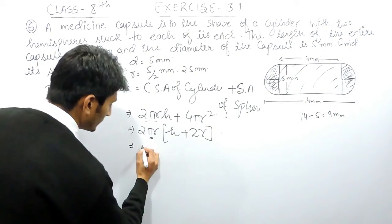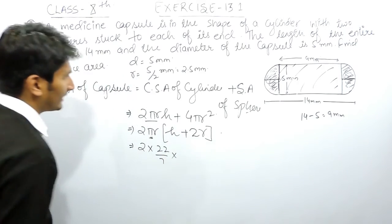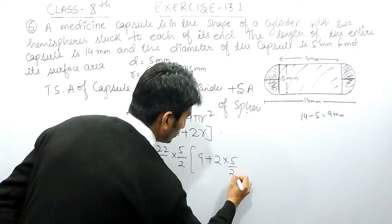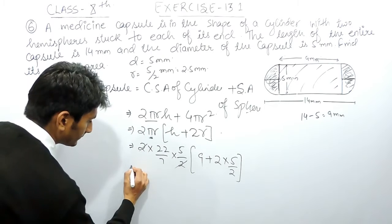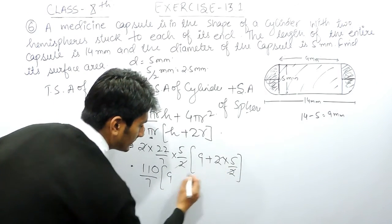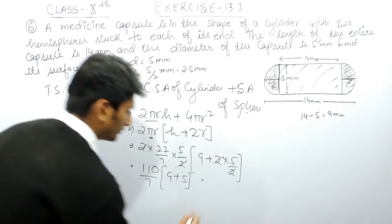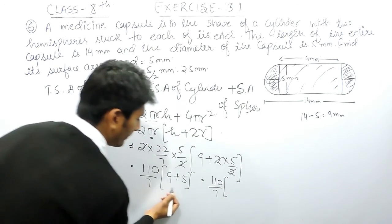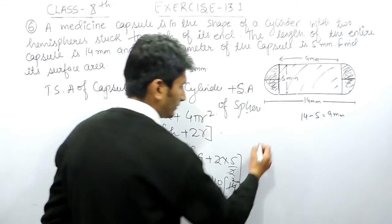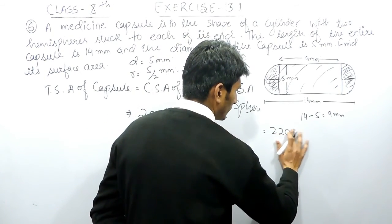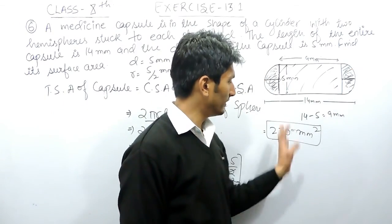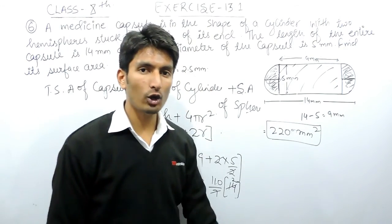Now substituting the values: 2 × (22/7) × (5/2) × (9 + 5). The 2s cancel, giving (22/7) × 5 × 14. Then 14 cancels with 7, leaving 2 × 22 × 5 = 110 × 2 = 220. So the total surface area of this capsule is equal to 220 mm². This is how you can solve this question.